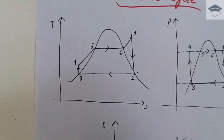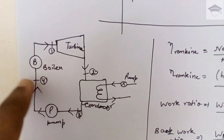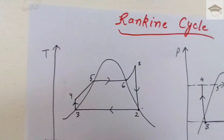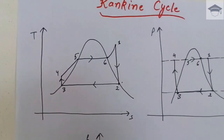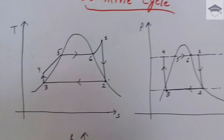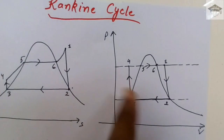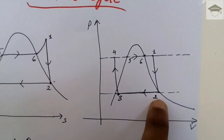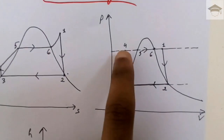This completes the TS diagram depicting the Rankine cycle. Similarly, on the PV diagram: from one to two we get work output from the turbine; from two to three heat is rejected in the condenser; from three to four work is supplied in the pump; and from four to one heat is added at constant pressure.